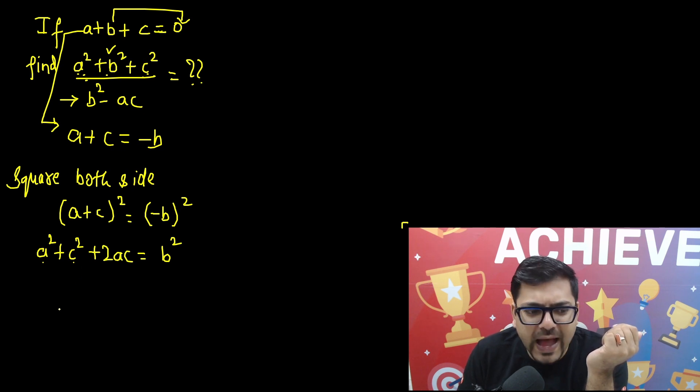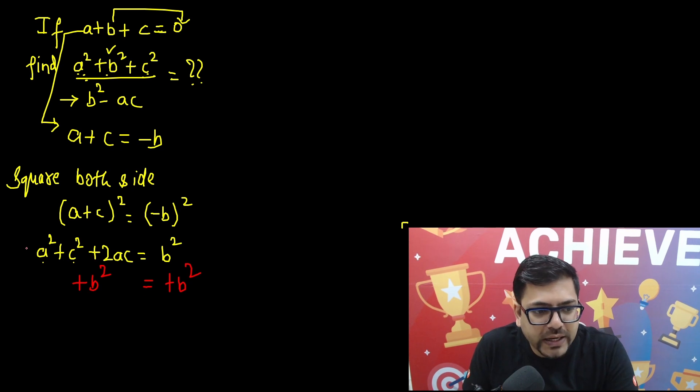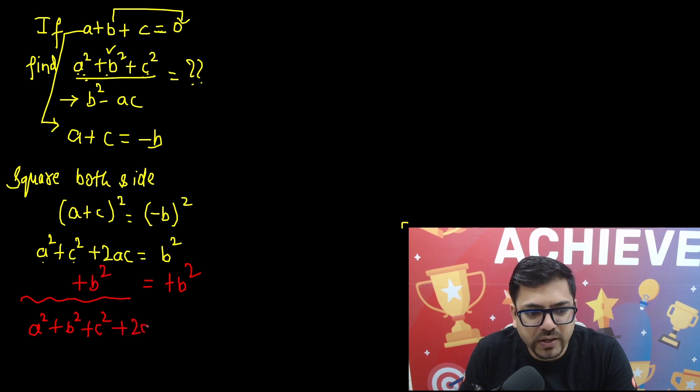So what if I add b square to both sides? Here also plus b square and here also plus b square. So if I add b square both sides, the left hand side will become a square plus b square plus c square and this 2ac will remain as it is and this equals 2b square.